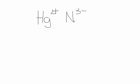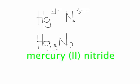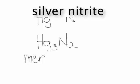So for the mercury(II) nitride, it would be Hg3N2.